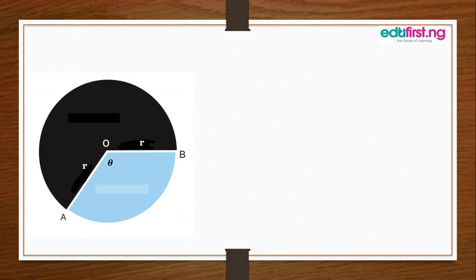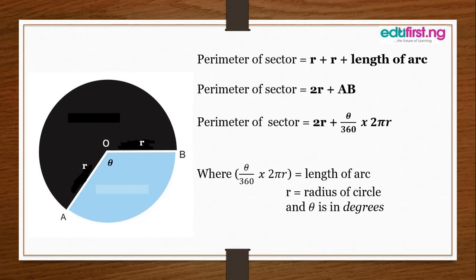The perimeter is going to be radius plus radius plus the length of the arc. In simple terms, perimeter of sector equals r plus r plus length of arc, which equals 2r plus arc AB. The full formula gives us: perimeter of sector = 2r + (θ/360) × 2πr, where θ/360 × 2πr is the length of the arc, r is the radius, and θ is in degrees.